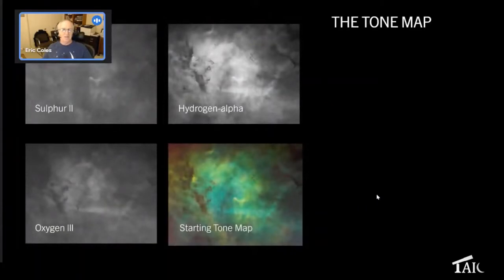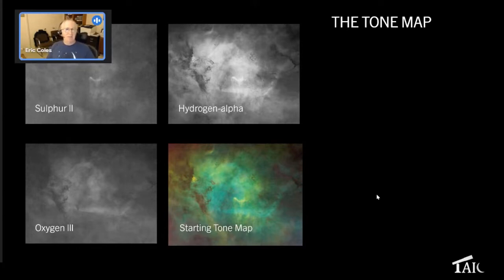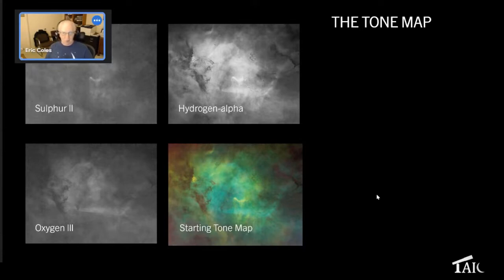Now, these are the starting images I'm going to work with to produce the tone map. We're going to work with a tone map that is a map of the colors without the stars. The reason we do this is that we have to stretch these images, and even the oxygen and sulfur shown here have already been stretched. Working with star-containing images causes stars to get bigger, and can result in purple halos. These starless images are all generated in PixInsight.